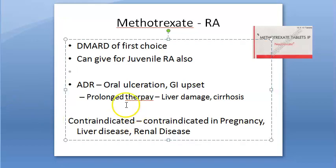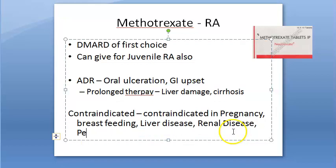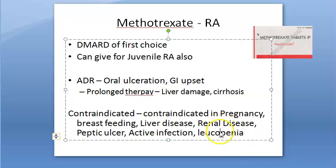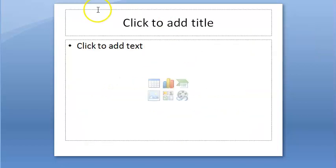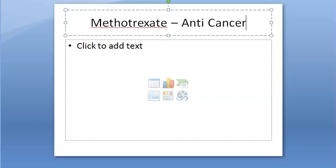Additional contraindications: do not give in breastfeeding, peptic ulcer (since it causes GI upset and oral ulceration), active infections (because it is an immunosuppressant), and leukopenia — if white blood cells are already low, further immunosuppression would be dangerous.